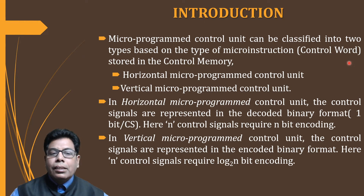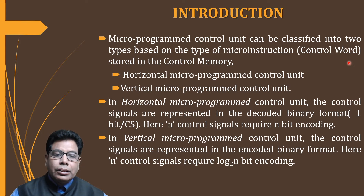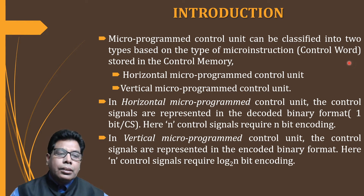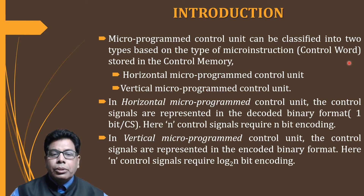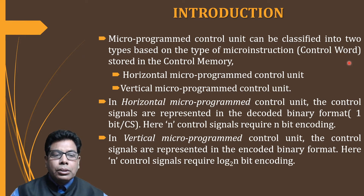Whereas in the vertical micro program control unit, the control signals are represented in the encoded binary format. Just a few bits represent the control signals, and n control signals require log2(n) bit encoding — that means only a few bits are required. We need hardware like a decoder to decode these bits into the control signals.